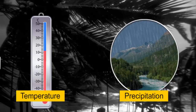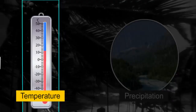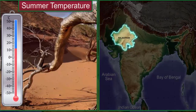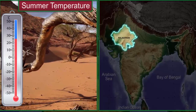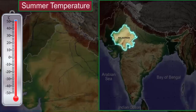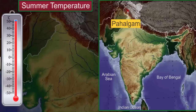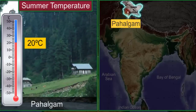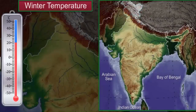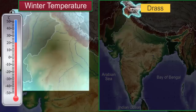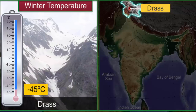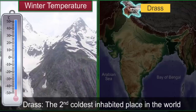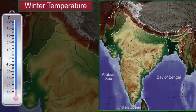Let us look at the variation in temperature experienced in different regions in India. In some parts of the Rajasthan desert, the temperature in summers occasionally touches 50 degrees Celsius. Whereas summer temperature in Pahalgam in Jammu and Kashmir may be around 20 degrees Celsius. During winters, the temperature in Drass in Jammu and Kashmir may fall as low as minus 45 degrees Celsius. Drass has become famous as the second coldest inhabited place in the world. On the other hand, Thiruvananthapuram may have a winter temperature of 20 degrees Celsius.